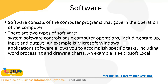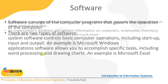Software consists of computer programs that govern the operations of the computer and help us get things done professionally. There are two kinds: system software, which controls basic computer operations including input and output, and application software — examples include Microsoft applications like Excel for calculations, and word processing tools for drawing charts and other tasks.